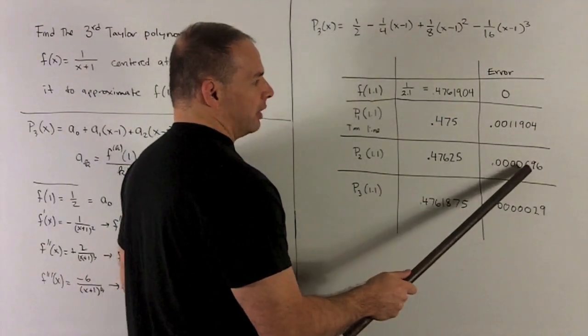If I add on one more term, so that's going to be the second Taylor polynomial evaluated at one point one, that gives me point four seven six two five. And we notice our error is showing up in the fifth decimal place.